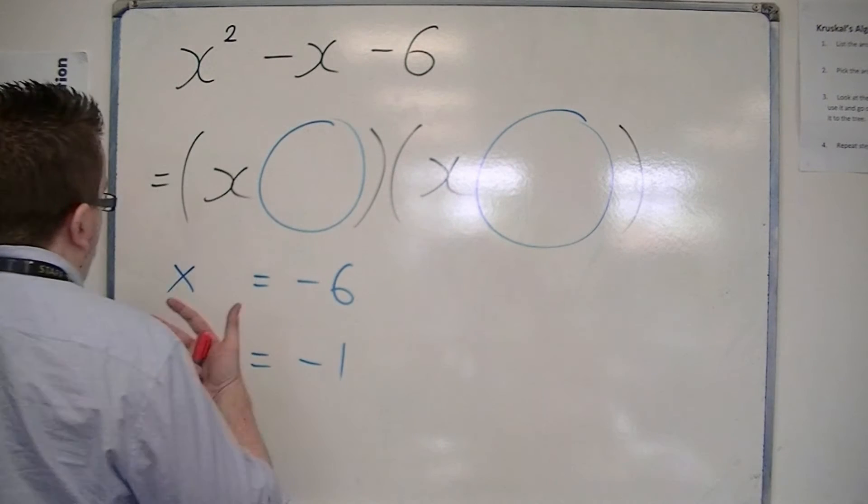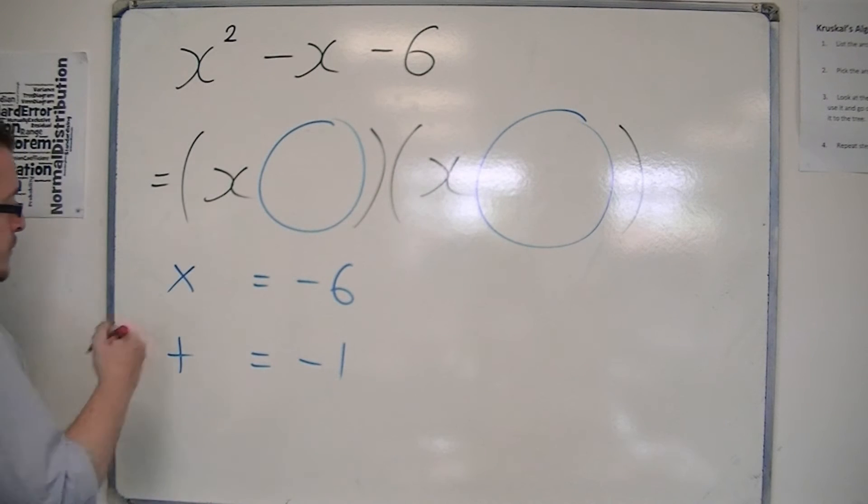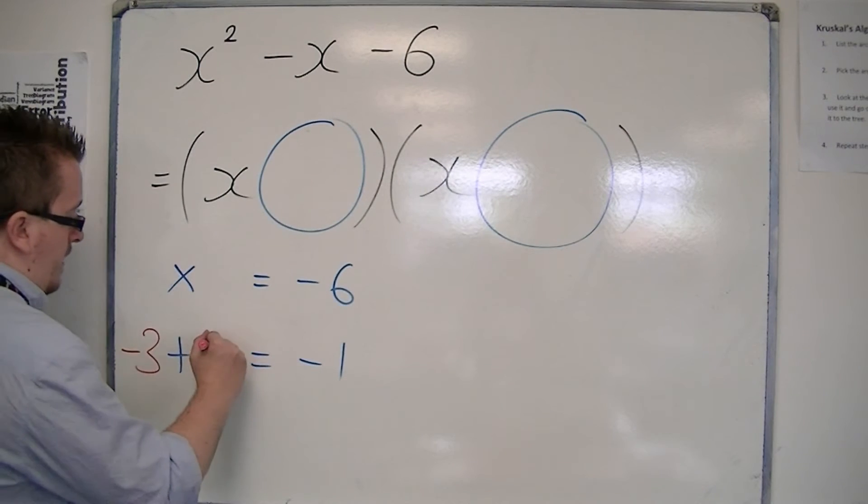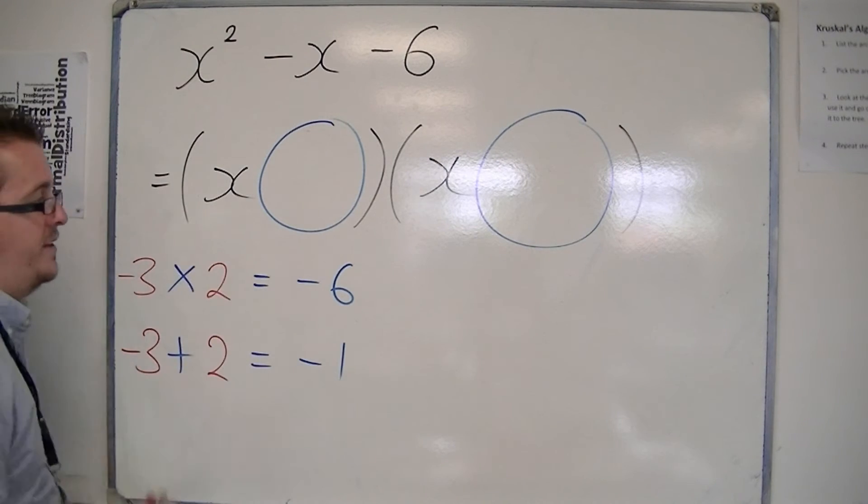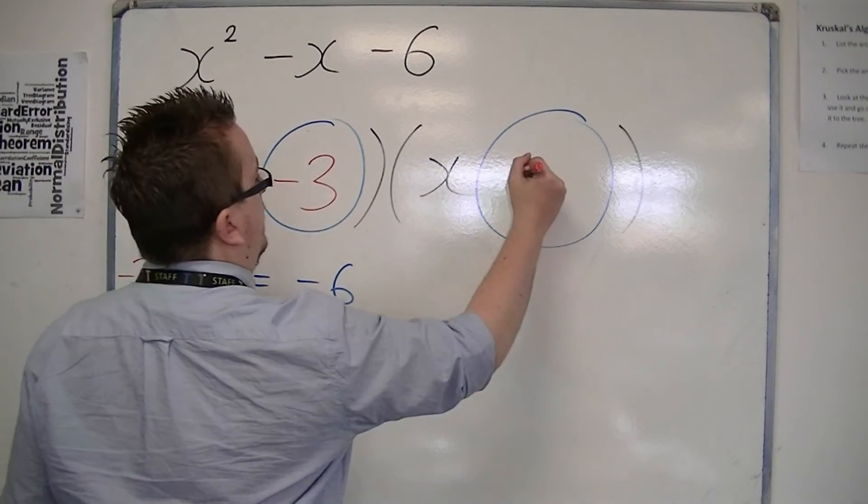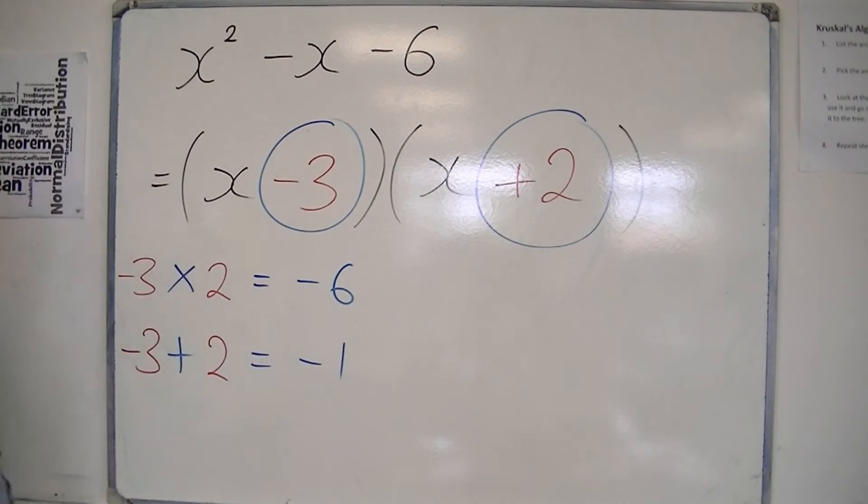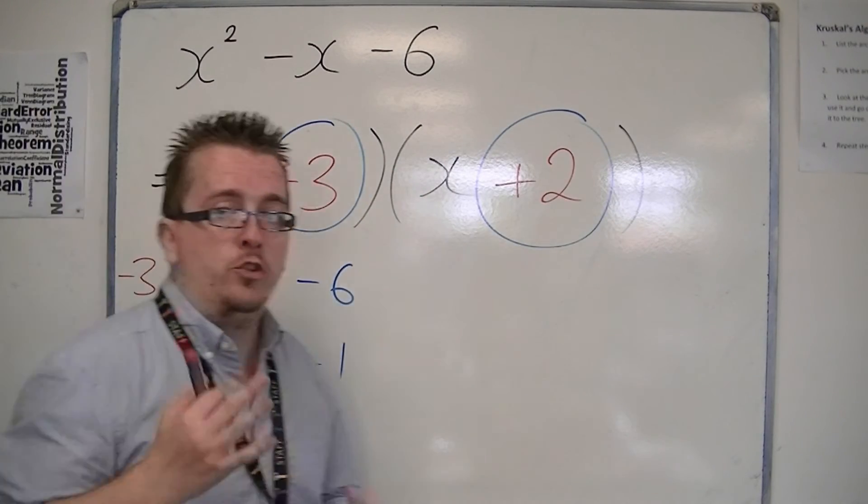And the two that do would be minus 3 and plus 2. Minus 3 plus 2 is minus 1, minus 3 times 2 is minus 6. So that is perfectly fine as the two numbers, and that's how it would factorise.